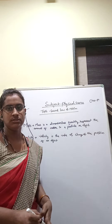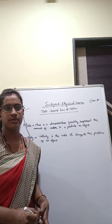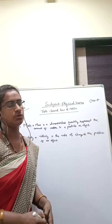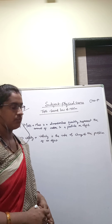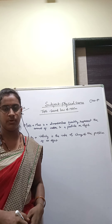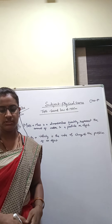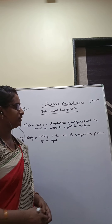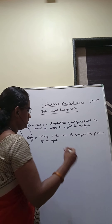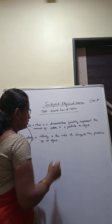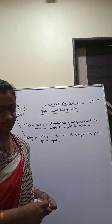The SI unit of mass is kilogram. Now, what do you know about velocity? Velocity is the rate of change of position of an object. Its SI unit is meter per second.